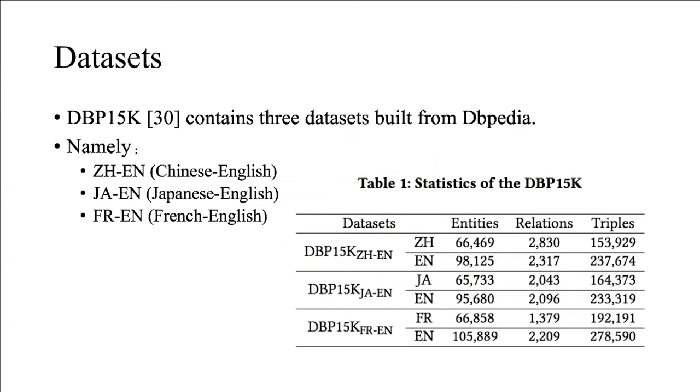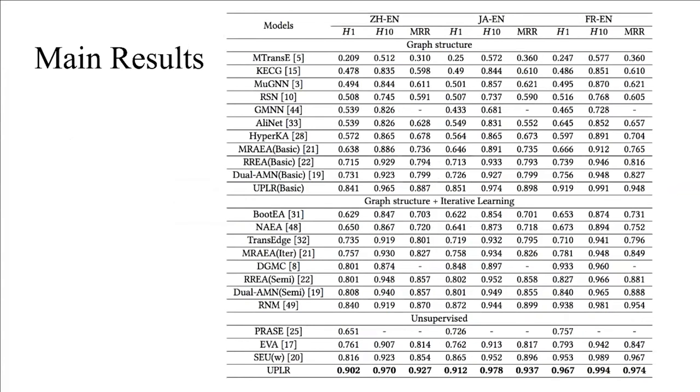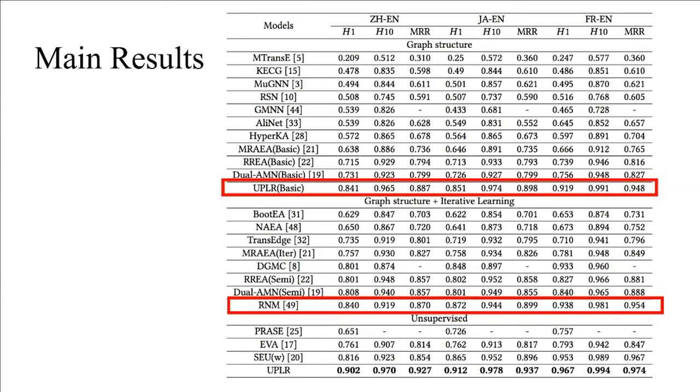We test our proposed model on the DBP15k dataset. DBP15k combines three types of data: Chinese-English, Japanese-English, and French-English. Results fall in three types: graph structure models, graph structure and interactive learning models, and unsupervised models. As in our submission paper, the best results for the supervised model is RREA. However, the basic version of UPLR is somewhat competitive with the supervised SOTA model. UPLR with interactive learning is currently the best method, achieving the results of SOTA.